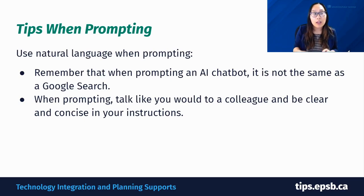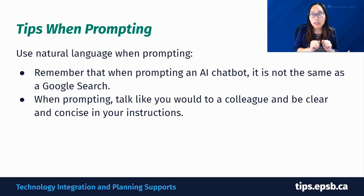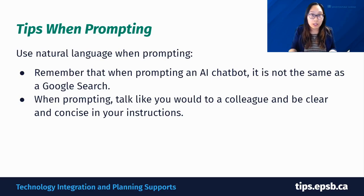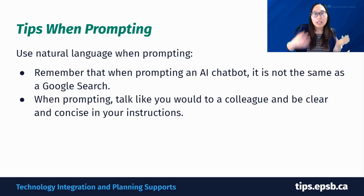My very first tip when it comes to being effective with AI tools is to use natural language when prompting. Remember that prompting an AI chatbot such as Google Gemini is not the same as a Google search. Instead of typing something like 'grade three lesson plan,' you want to speak the way you would to a colleague — clear and concise. For example, say: 'I am a grade three teacher, please provide a lesson plan on [topic],' and describe the context and any requirements you have.